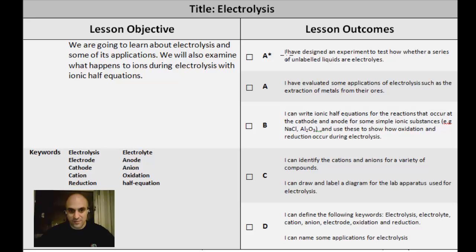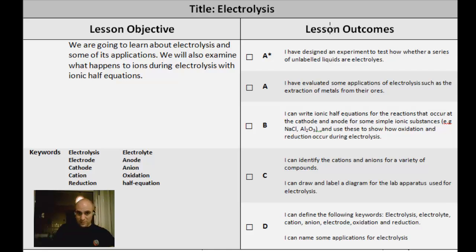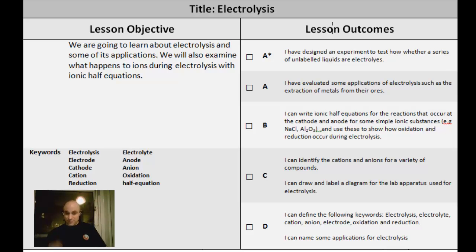Welcome to the electrolysis lesson for extension science lesson C3.13. Here you're presented with the lesson title, objectives, and outcomes. We're going to look at the meaning of electrolysis, its applications, and for B and A grades, we need to examine electrolysis and show what's happening using balanced ionic half equations.